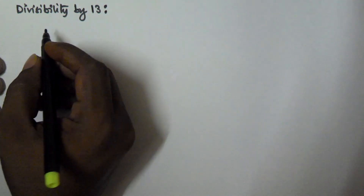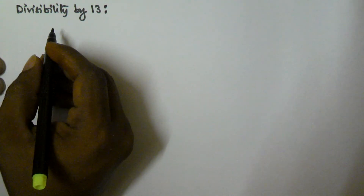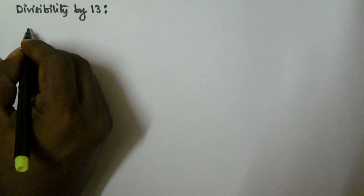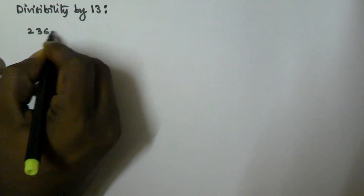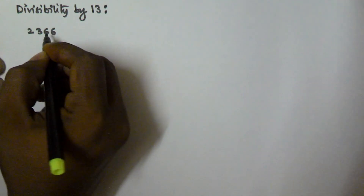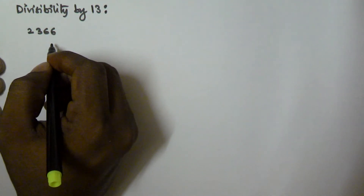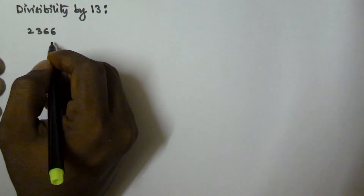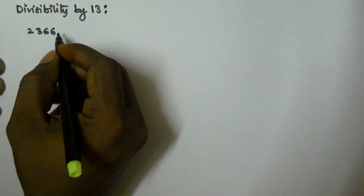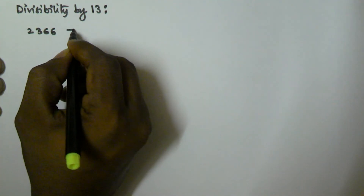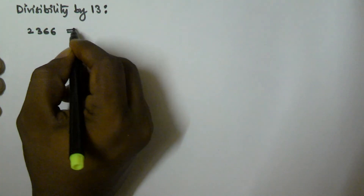Let us take one example: 2366. We have to check whether this number is divisible by 13 or not. To find this, we apply the divisibility rule for 13.